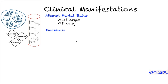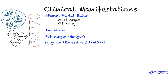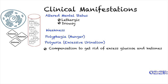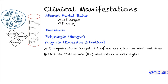Another symptom is weakness — our muscle cells are also glucose deprived, which causes weakness. Another symptom is polyphagia, or hunger. Because our cells are glucose deprived, they send signals that we are hungry. Another symptom is polyuria — this is the body's compensation to get rid of excess glucose and ketones in the system. With excessive urination, we're also excreting potassium and other electrolytes, which causes electrolyte imbalance.